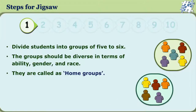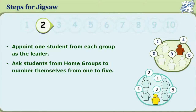Let us see the different steps of Jigsaw strategy. Initially, the teacher divides the entire class of students into groups of five or six. This should correspond to the number of content segments that have to be mastered by the students. The groups should be diverse in terms of ability, gender, and race. These groups are called the home groups. In the second step, the teacher appoints one student, preferably the most mature from each group, as the leader.